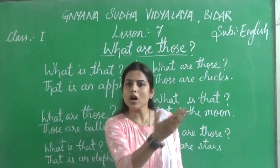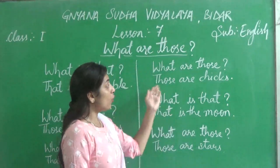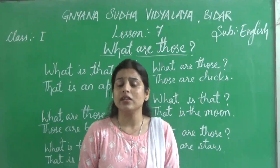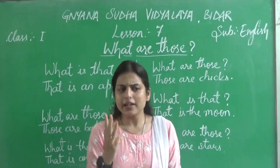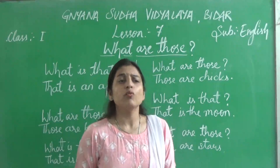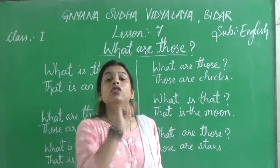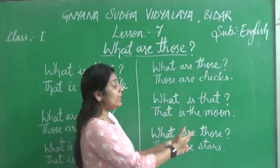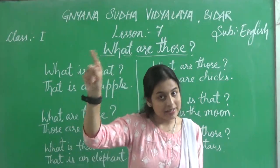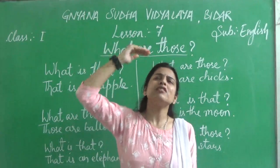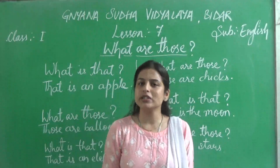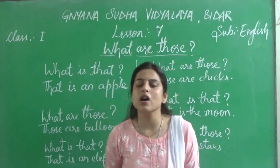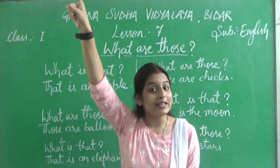What is that? That is an elephant. Next — what are those? Those are chicks. How many chicks are you able to see in your reader? Three chicks — there are more than one chick, so we say 'those are chicks'. What is that? That is the moon — the moon is very far from us in the sky.